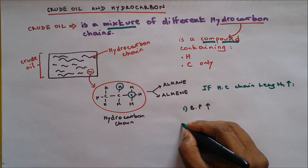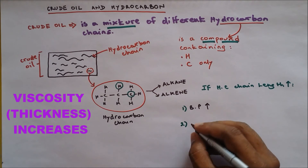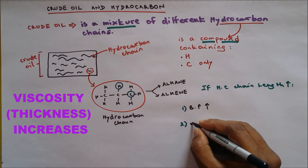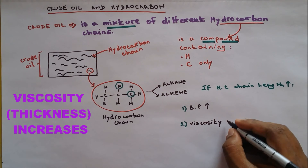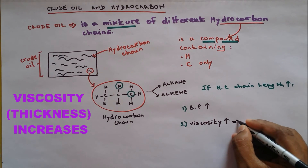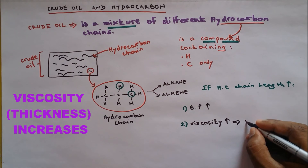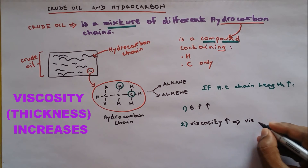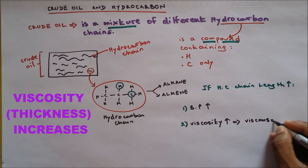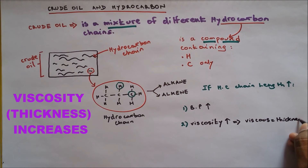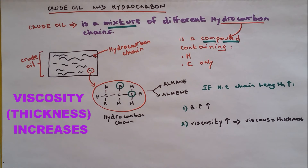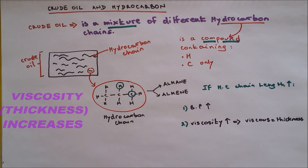Number 2: viscosity. Viscosity increases. What is viscosity? Viscosity means thickness. If a chain is longer it is thicker, which also means it will be less runny.